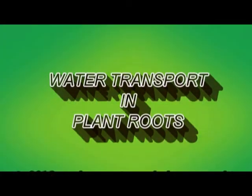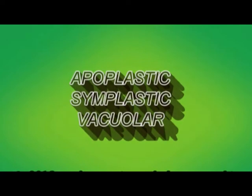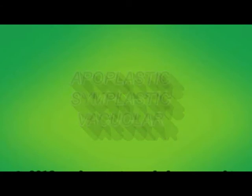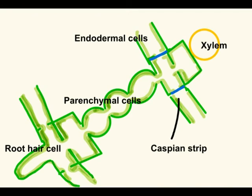Water reaches the xylem of a flowering plant in three ways: apoplastic, symplastic, and vacuolar. It passes from the root hair cells through the parenchymal cells to the endodermis and Casparian strip, and then to the xylem.